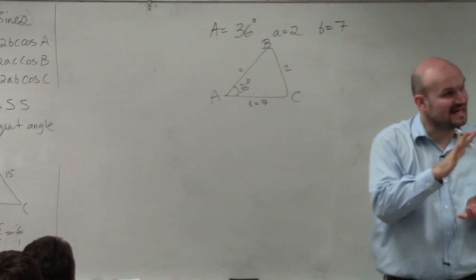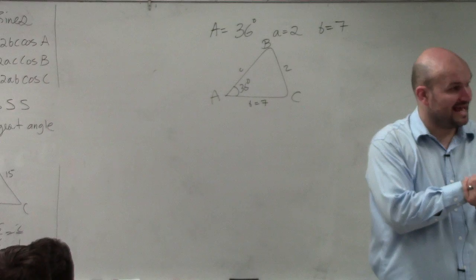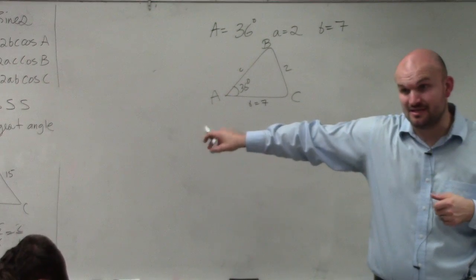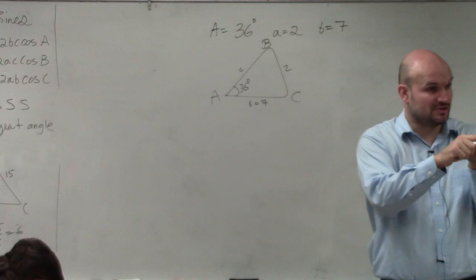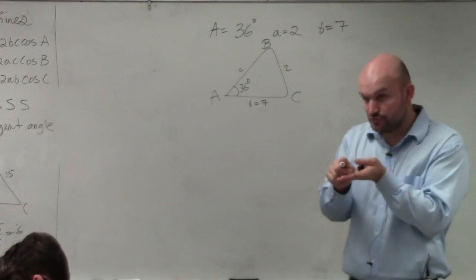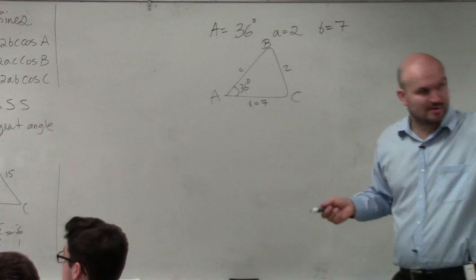But remember this is a side-side-angle, so therefore this is an ambiguous case. So it's possible for me to have one triangle, no triangles, or two triangles, which would be that second case solution, which I kind of talked about over there.